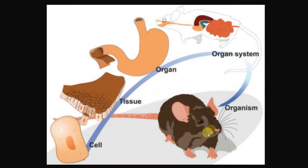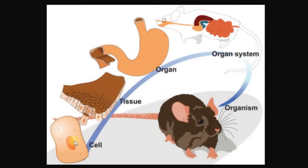So this is what we have studied in class. And now we're going to start learning the organization of animals. As we said, living things are made up of cells, but cells can work together and group to form tissue.